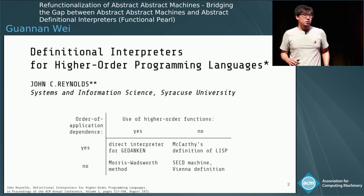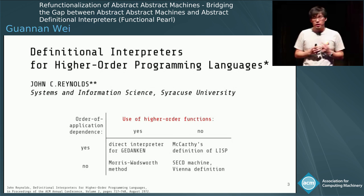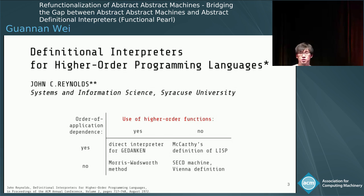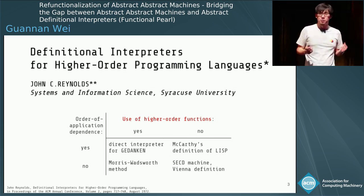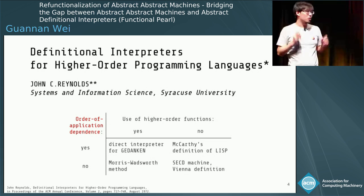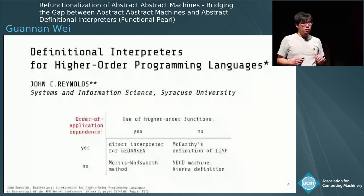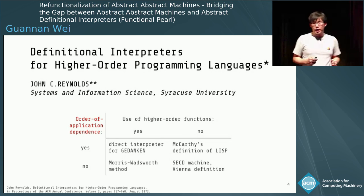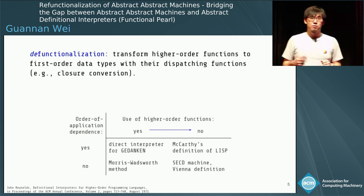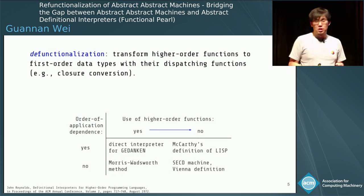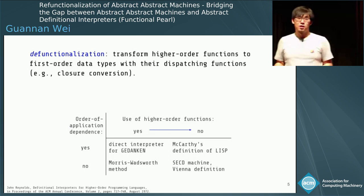In this paper, Reynolds categorized many different kinds of interpreters according to two dimensions. The first is whether the interpreter uses higher order functions to represent function values. The second is whether the order of application of the defined language depends on the defining language. Reynolds also identified a transformation called defunctionalization, which transforms higher order functions into first order data types along with their dispatching functions.